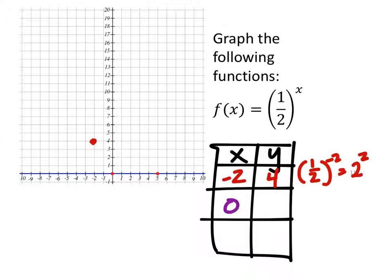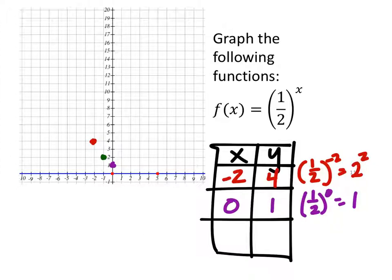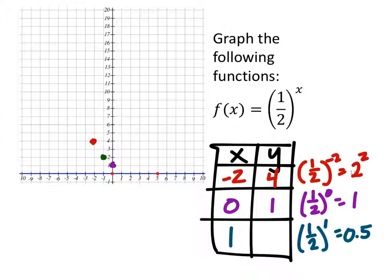Let's go to x equals 0 and confirm: 1 half to the power of 0 — anything to the power of 0 is 1 — so the point is (0, 1). If you wanted x equals negative 1, that would give 2. And for x equals 1, that would be 1 half to the power of 1, which is 0.5.